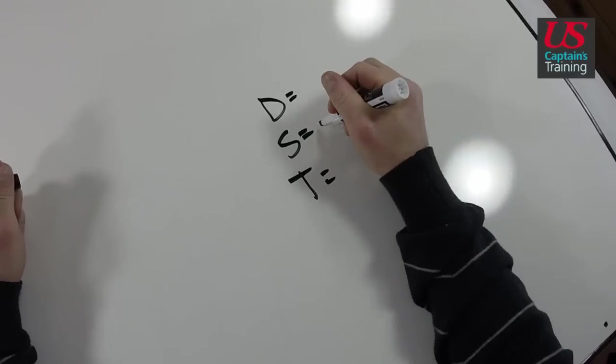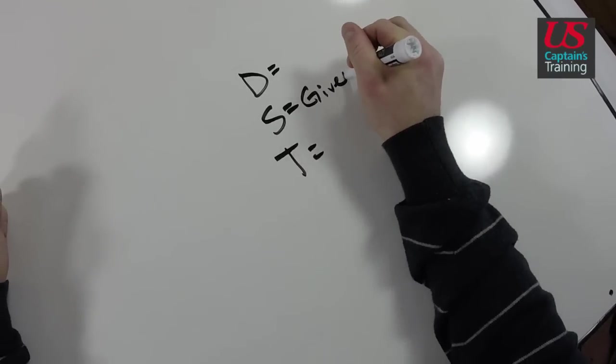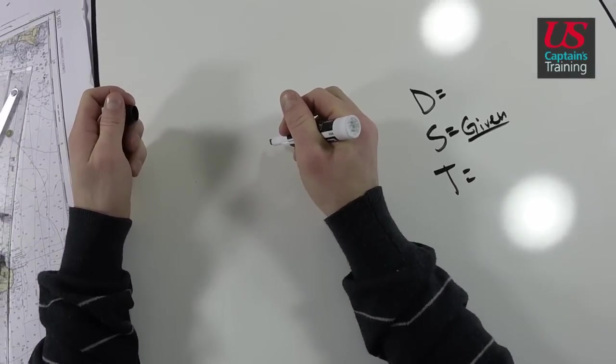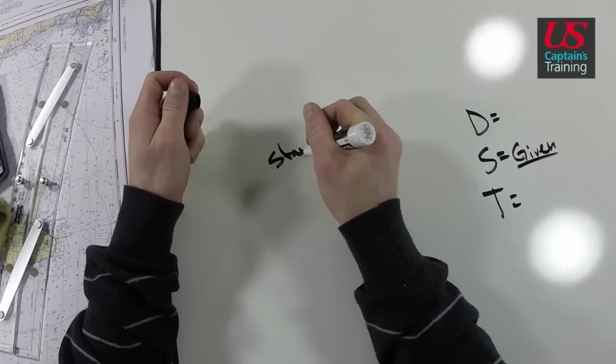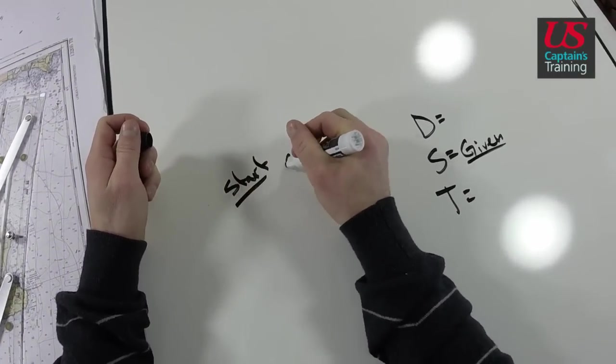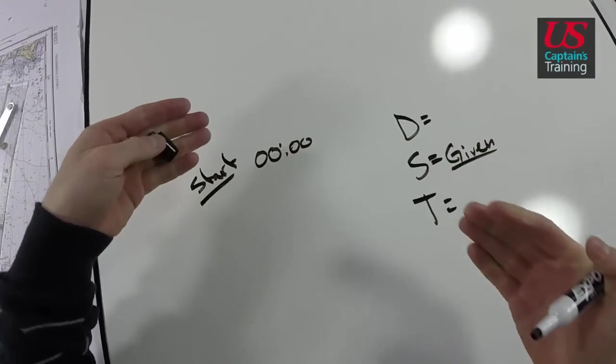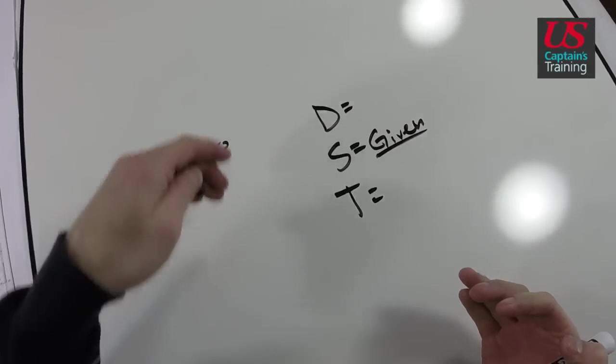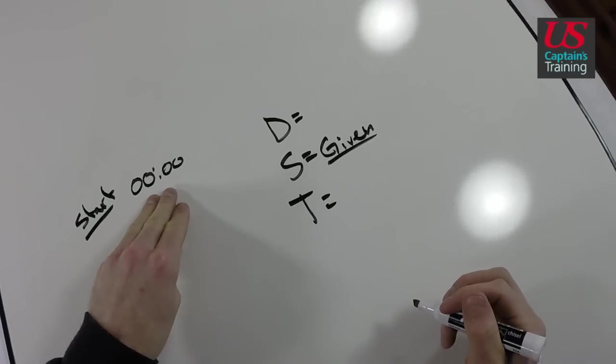In the problem, speed is given, so we have that one, and they'll give us a start time. It will be a clock time - the first two digits are hours, and the second two are minutes. This will come into play.